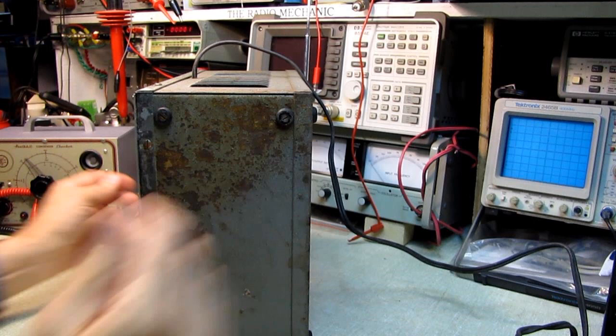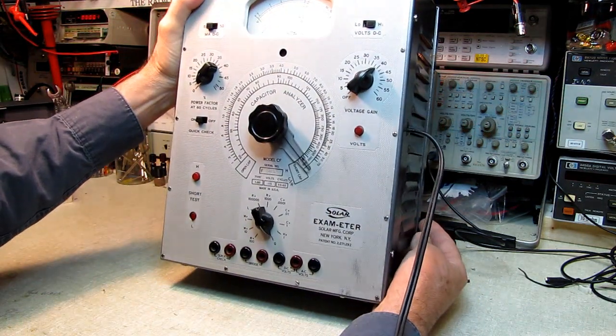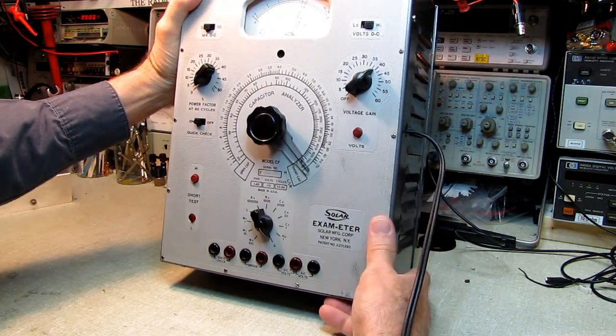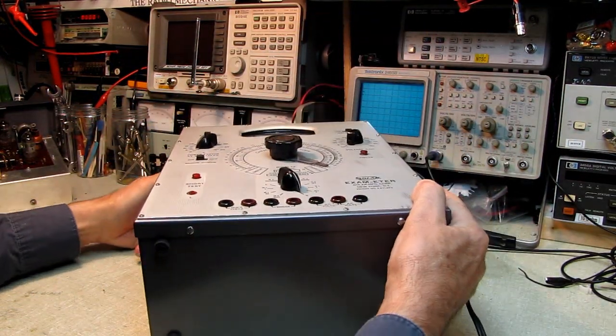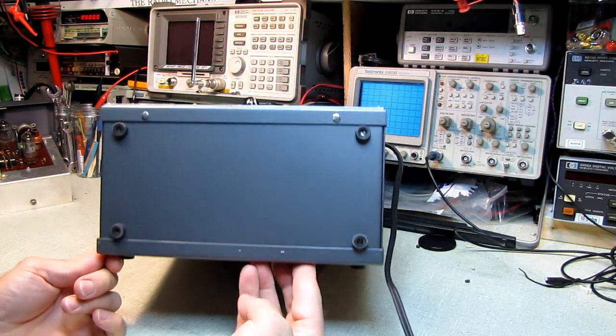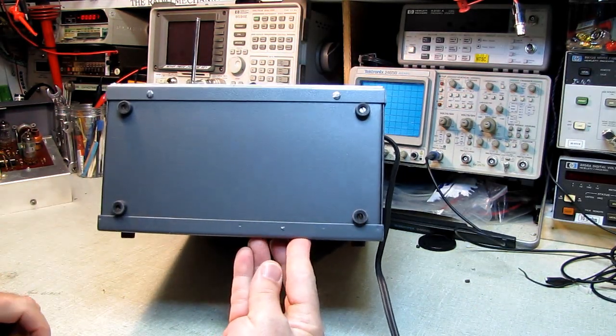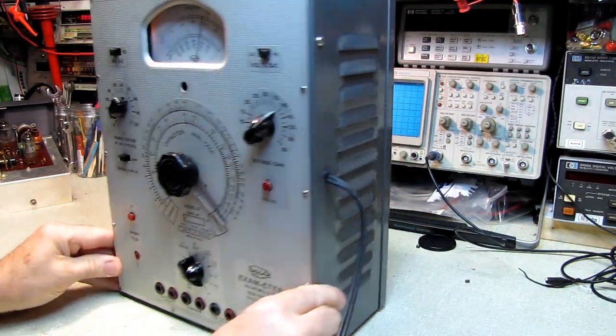We've replaced all of the capacitors inside this unit, and some of the resistors that have drifted out of tolerance. You can see the bottom now is rust-free. We have new feet on it, fresh coat of paint, cleaned up the front panel.